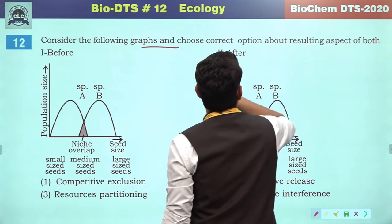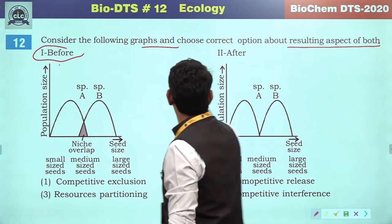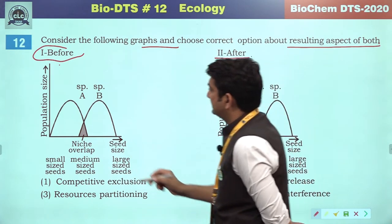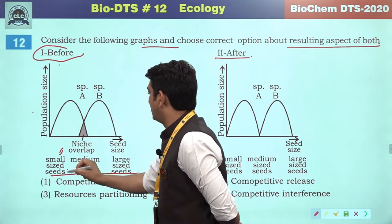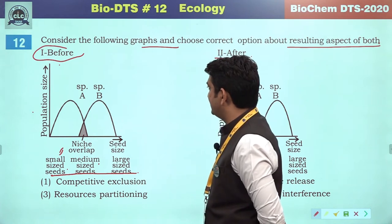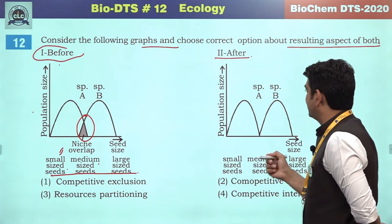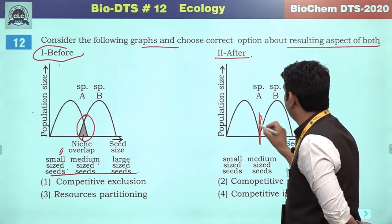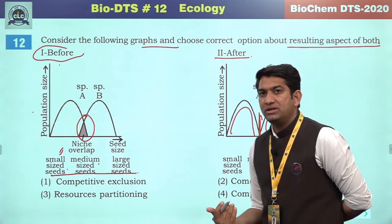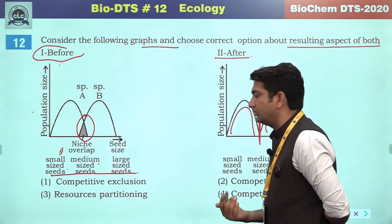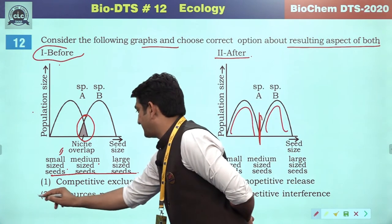Consider the following graphs and choose the correct option. Population size is plotted using small, medium and large size seeds. There is a clear overlapping between species A and B before, but after the graph shows no overlapping — both maintain their proper existence. This indicates that resources have been partitioned between the two species. So the correct answer will be resources partition — third option.